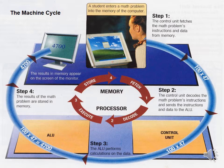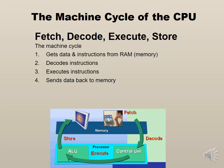The machine cycle is what goes on in your CPU all the time. There are four steps: Fetch, Decode, Execute, and Store. The fetch step is when data and instructions are fetched from RAM or memory. The decode step is where the instruction gets decoded, or separated into what is the command and what is the data part. Step three is when the arithmetic logic unit, or ALU, which is inside the CPU, executes the instruction. Step four is when the result gets sent back to memory.